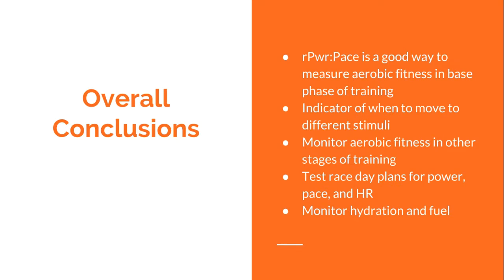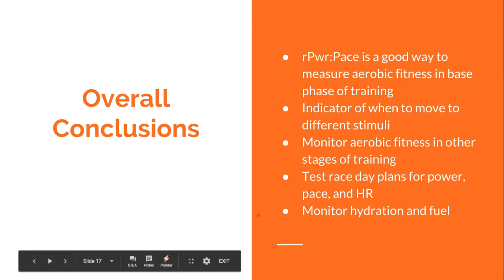Overall conclusions: running power versus pace is a good way to measure aerobic fitness and base phase training. It's a good indicator of when to move on to a different stimulus, and to monitor aerobic fitness in other stages of training. You can also use it to test race day plans for power, pace, and heart rate — for example, if you plan to hold 280 watts for your event, you can test whether you're aerobically fit enough to hold that power and see what happens to your heart rate.